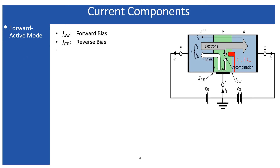The most important topic of the BJT is the current component. This topic is essential when dealing with the BJT. As a reference, the NPN transistor is considered here, though PNP analysis is the same. Only the forward active mode is considered because this is the mode that offers amplification for the entire course of analog electronic circuits.